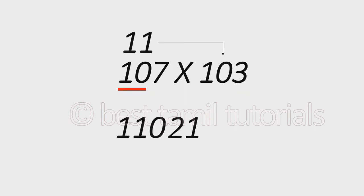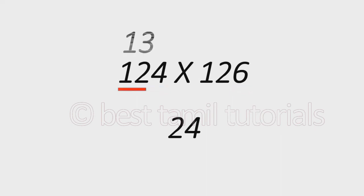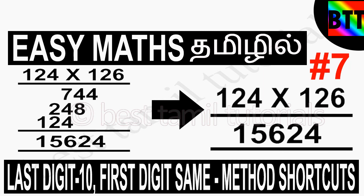Let's look at that example: 124 times 126. If you look at this, the last digits are 4 plus 6, which is 10, and the first digits are the same. So 4 times 6 is 24. The first part is 12, and 12 plus 1 is 13. So 13 times 12 is 156. The answer is 15624. If you look at this two-step method, it's easy to answer.